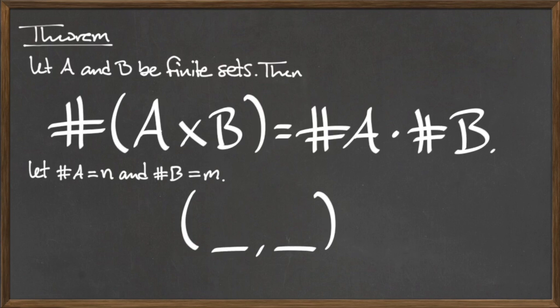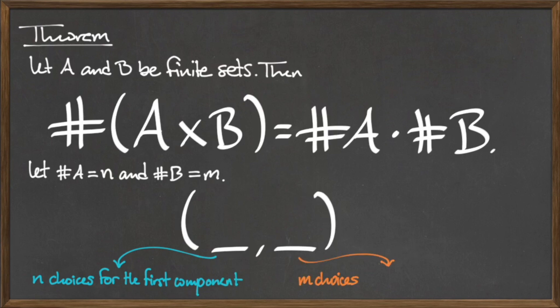Since the cardinality of A is equal to N, there are N choices for the first component of our ordered pair. Similarly, since the cardinality of B is M, there are M choices for the second component. Since the choices for the first component are independent of the choices for the second component, by the property known as the multiplication principle,